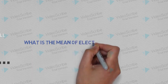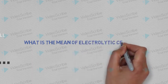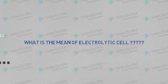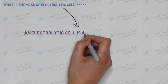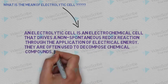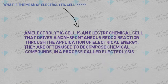But what is the application of Electrolytic cell? Before applications, let's see the definition of Electrolytic cell. An Electrolytic cell is an electrochemical cell that drives non-spontaneous redox reaction through the application of electrical energy. They are often used to decompose chemical compounds in a process called Electrolysis.